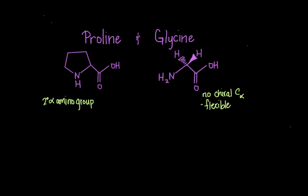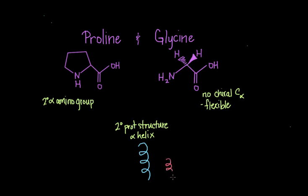So why are proline and glycine grouped together? They both play a role in disrupting a particular pattern found in secondary protein structure called the alpha helix — a coiled up polypeptide chain. Because of its secondary alpha amino group, proline introduces kinks into the alpha helix. And since glycine is so flexible around its alpha carbon, it tends to do the same thing. Thus both of these amino acids are known as alpha helix breakers.